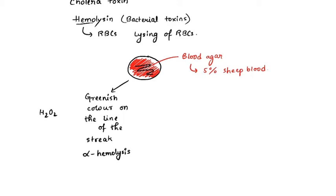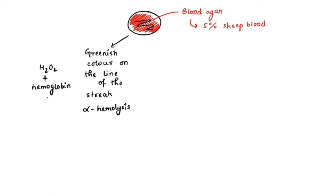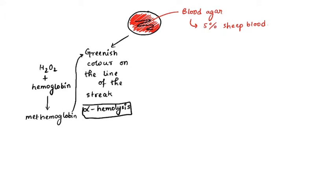This greenish color comes about because the bacteria that cause alpha hemolysis produce hydrogen peroxide. This hydrogen peroxide reacts with hemoglobin, producing an oxidized derivative of hemoglobin called methemoglobin, and this methemoglobin gives the greenish color.